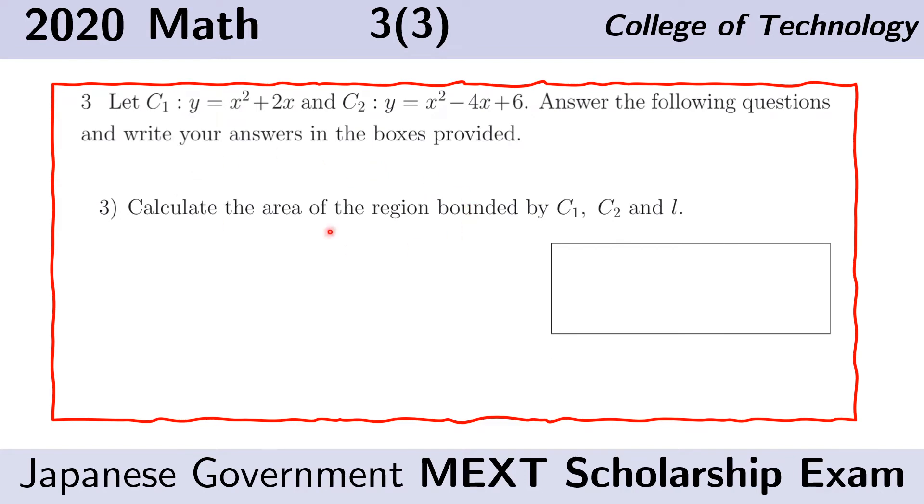This is the third question for the problem where we are given two curves C1 and C2 and we are asked to find the area of the region bounded by C1, C2 and the common tangent L. In the previous two questions, we have been asked to find the intersection between C2 and C1 and the equation of L. In this problem, the first step is to sketch the given curves and the tangent L.